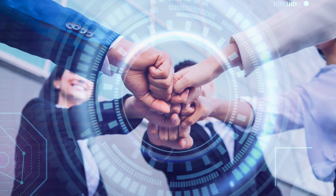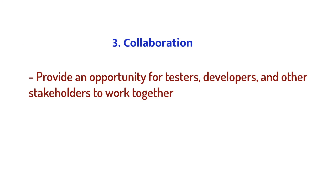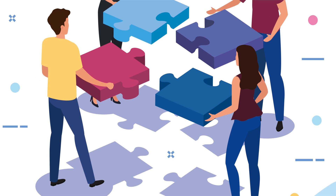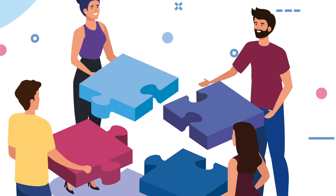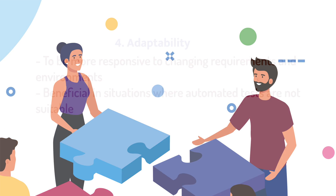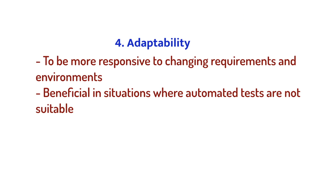Collaboration: Collaboration is an essential aspect of the DevOps approach, and exploratory testing can be an effective way to foster collaboration across all stages of the software development lifecycle. By working together towards a common goal, teams can improve the quality of the software and deliver high quality software that meets customer expectations. Adaptability: Adaptability is a critical aspect of the DevOps approach, and exploratory testing can be an effective way to facilitate adaptability in the software development process.